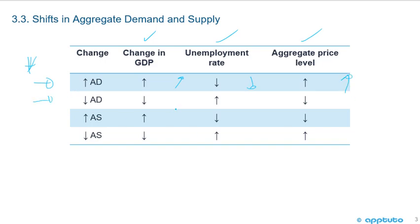A decrease in aggregate demand is the opposite: it decreases GDP, increases the unemployment rate, and puts downward pressure on the aggregate price level. An increase in aggregate supply is going to increase GDP, decrease the unemployment rate, and decrease the price level — so a little different than the increase in aggregate demand, as increasing supply decreases the price here.